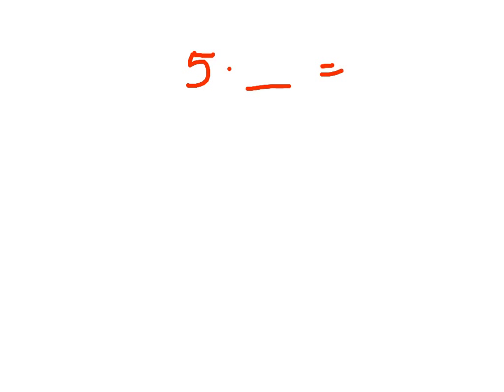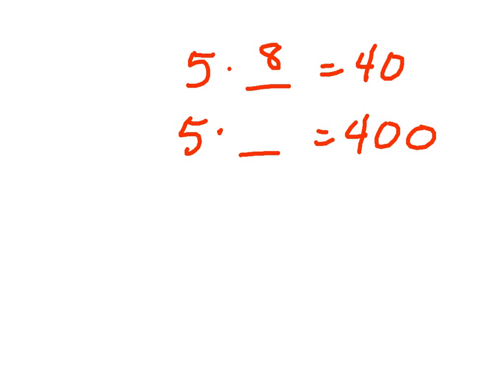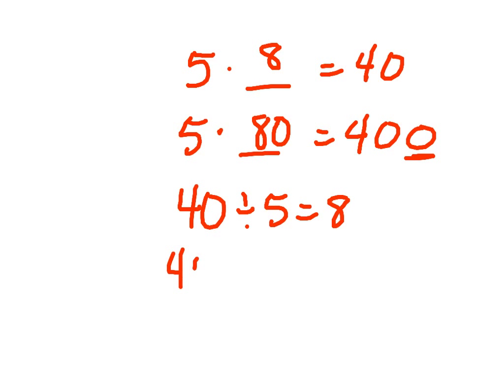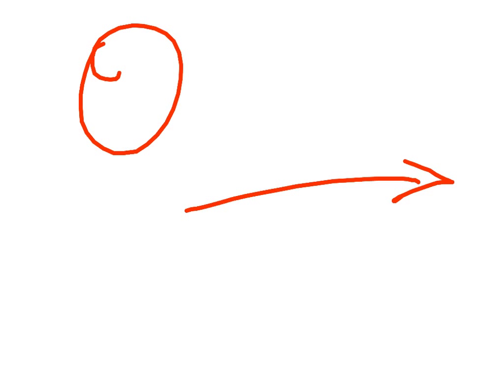Let's try a couple of examples. Five times something equals forty — we know that's going to be eight. If five times something equals four hundred, we've got that eight, but there's an extra zero on this side, so by a power of ten, it's five times eighty. Conversely, forty divided by five equals eight, and four hundred divided by five equals eighty. If you have an extra zero on the dividend, you carry that zero to the quotient. Just do a couple on the side as a quick check.